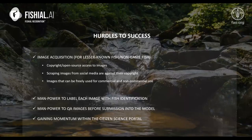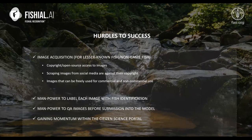We have a few hurdles to success. Image acquisition for lesser-known fish and non-game fish is a challenge. Copyright and open source access to images is another — scraping images from social media could be very beneficial, however it's usually against their copyright. We're also limited in manpower to label each image for fish identification and to QA images before submission into the model, since we can only process as many as the number of biologists we have. Our last hurdle is gaining momentum within the citizen science portal.